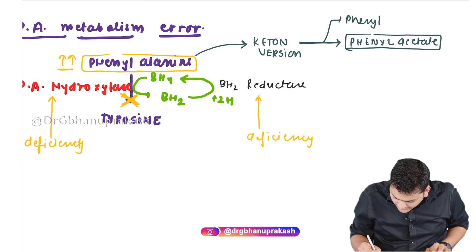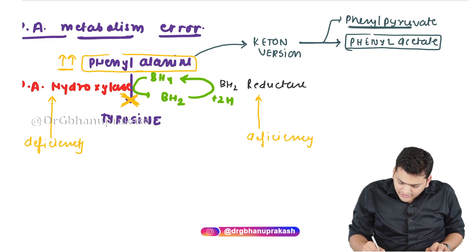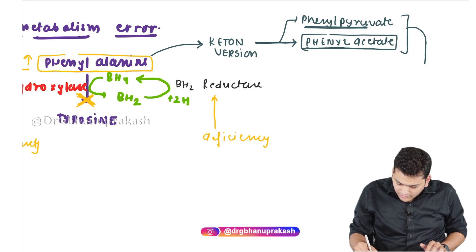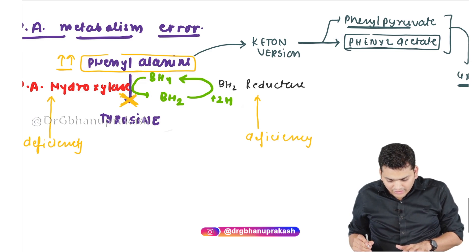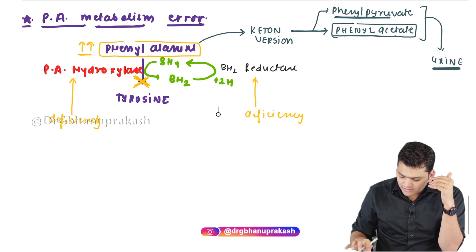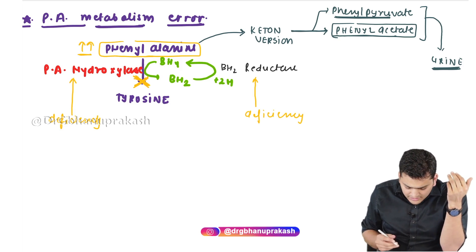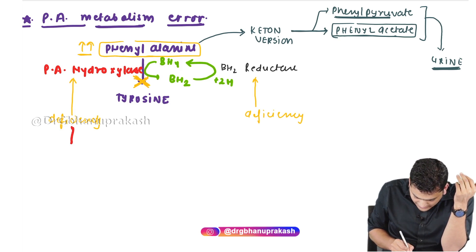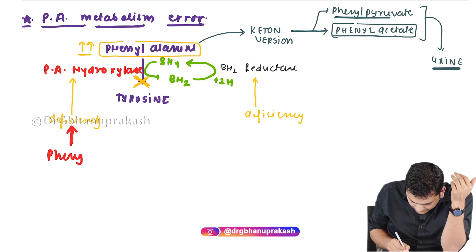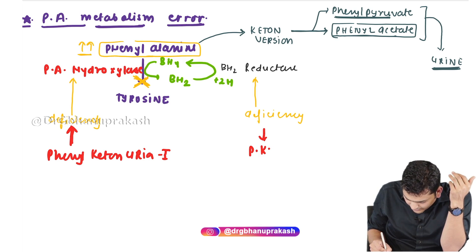We are particularly interested in phenylacetate. The disease where ketone versions of phenylalanine appear in the urine is called phenylketonuria. Deficiency of phenylalanine hydroxylase leading to phenylketonuria is called phenylketonuria type 1, and deficiency of BH2 reductase is called phenylketonuria type 2.